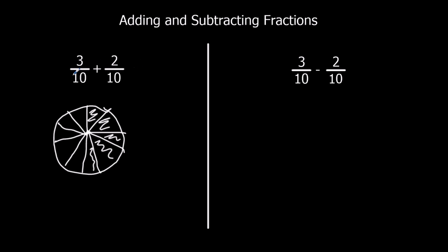So when we've got the same denominator — the same number on the bottom, 10 and 10 — we can just do 3 plus 2, which is 5 tenths. 5 tenths can be simplified because 5 and 10 are both in the 5 times table, and 5 tenths is the same as 1 half. And you can see that here we've got half a pizza.